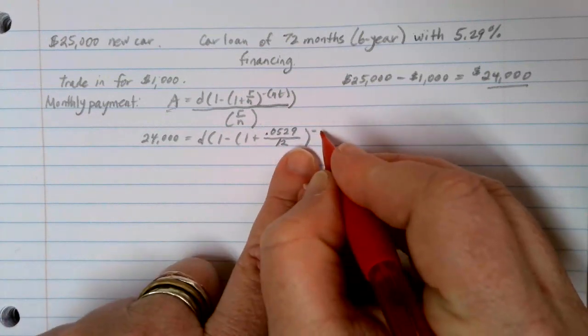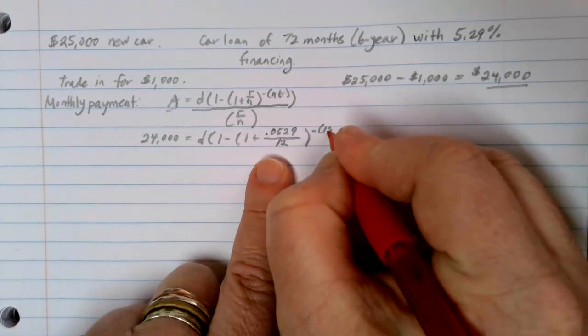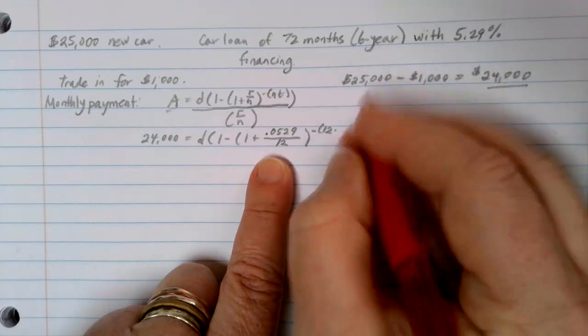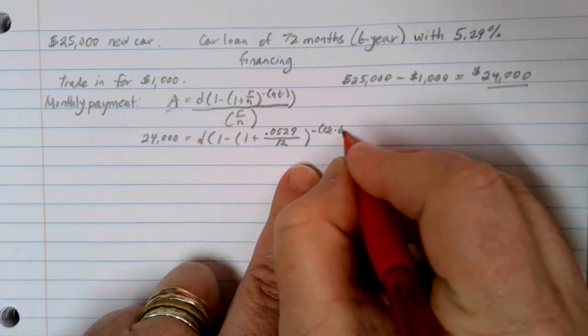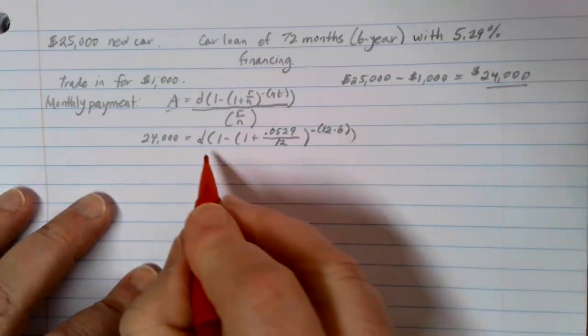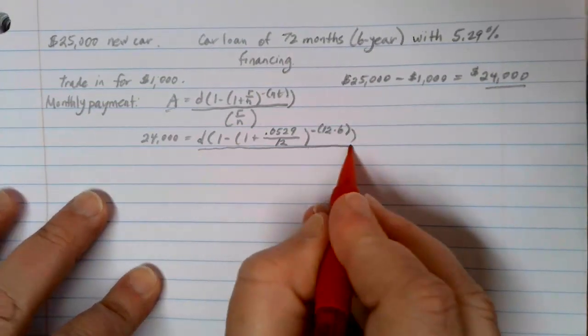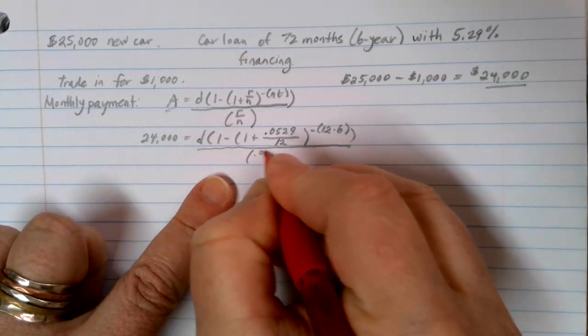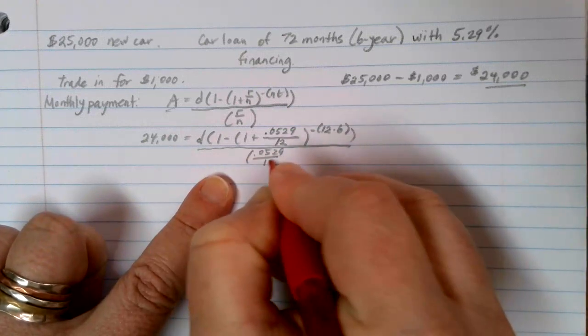The loan formula has a negative exponent. We're making payments every month for six years. Remember that your T has to be in years, not in months. And then divide by that R over N, that 0.0529 over 12.